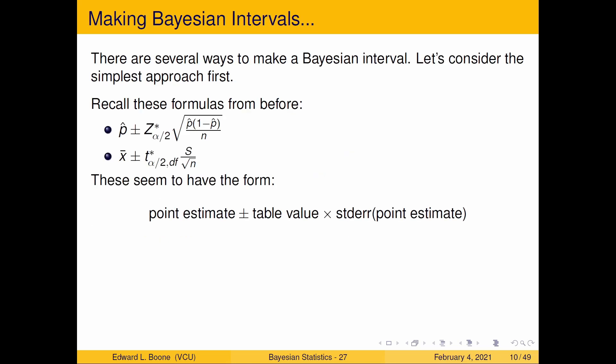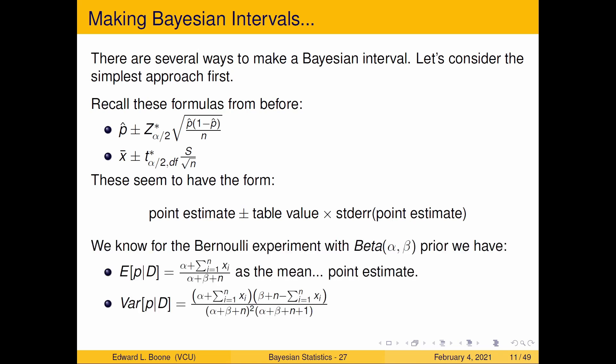From a Bayesian approach, p is going to be random and let's just play around here with a way of making an interval that sort of mimics the frequentist ways. If you look at the frequentist confidence intervals you'll see p̂ ± z* α/2 √(p̂(1-p̂)/n) and you get this sort of general formula of the point estimate ± some table value × some standard error of the point estimate and that thing usually has a square root associated with it somewhere.